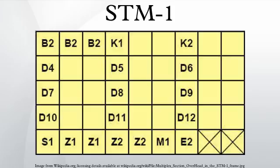RSOH: First row equals unscrambled bytes. Their contents should therefore be monitored. X equals bytes reserved for national use. D equals bytes depending on the medium. The regenerator section overhead uses the first three rows and nine columns in the STM-1 frame. A1, A2: